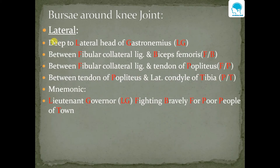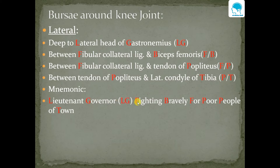Now bursae on the lateral aspect: these are deep to the lateral head of gastrocnemius, between the fibular collateral ligament and biceps femoris, between the fibular collateral ligament and tendon of popliteus muscle, and between the tendon of popliteus muscle and lateral condyle of tibia. We can remember these using the mnemonic 'Lieutenant Governor Fighting Bravely For Poor People of Town.' Bursae lie between either muscle or between bone and muscle, shown with an oblique symbol between the two structures.